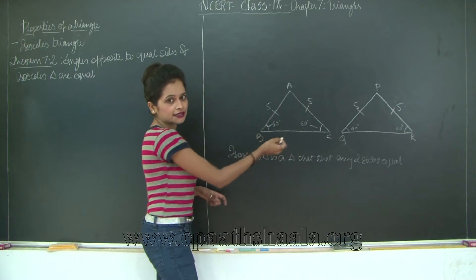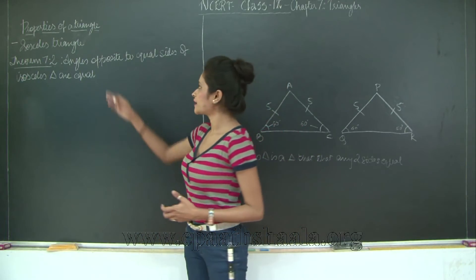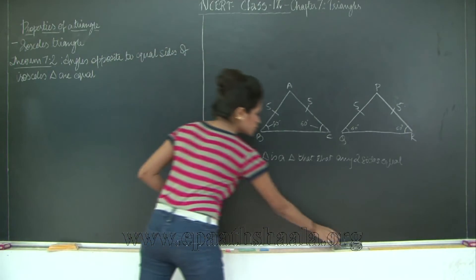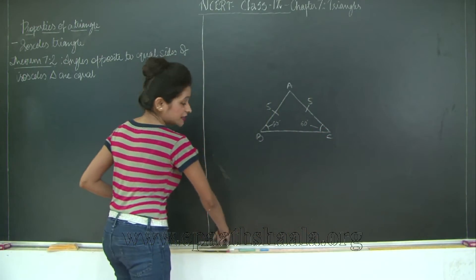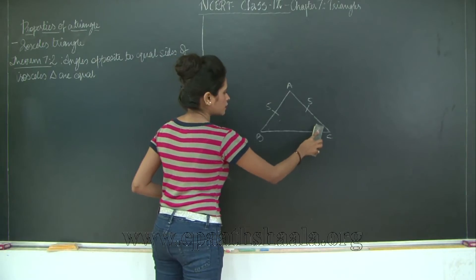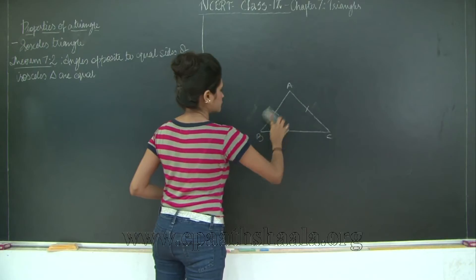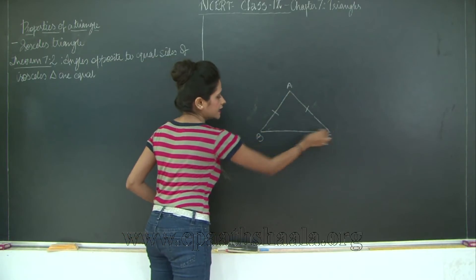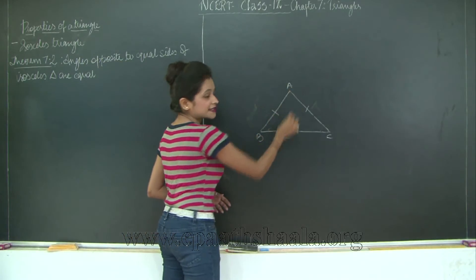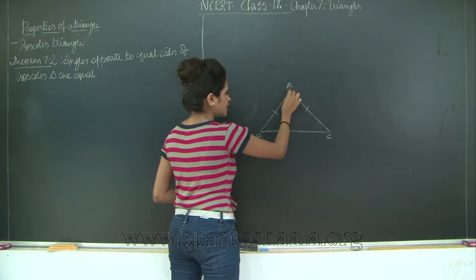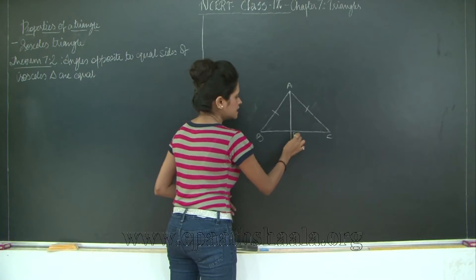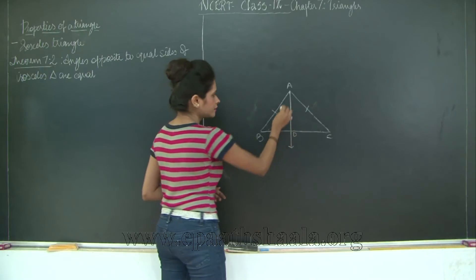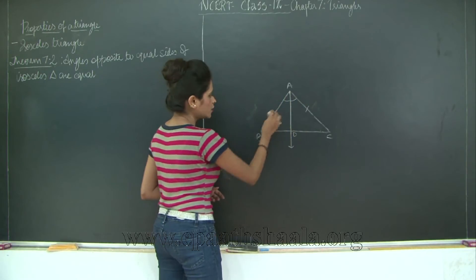So this is just an example for superimposition, but we are going to look at the angles opposite to the equal sides of the isosceles triangle. Based on this we have Theorem 7.2 in your textbooks: angles opposite to equal sides of an isosceles triangle are equal. Let us go ahead and prove this theorem. I will take triangle ABC, given that AB is equal to AC, and I need to prove that angle ABC is equal to angle ACB. We will draw the bisector of angle BAC, and let D be the point where this bisector intersects BC.